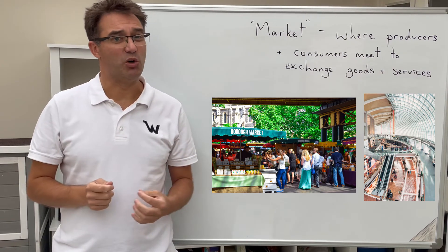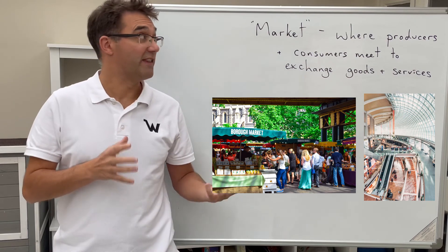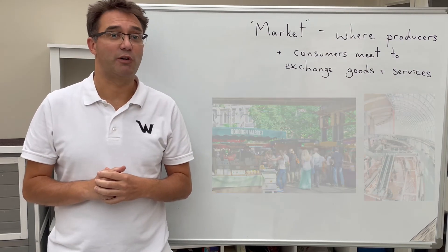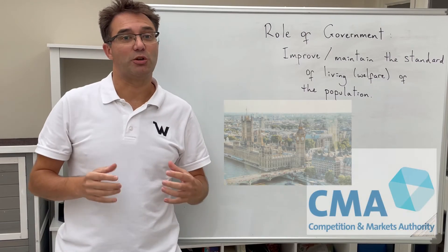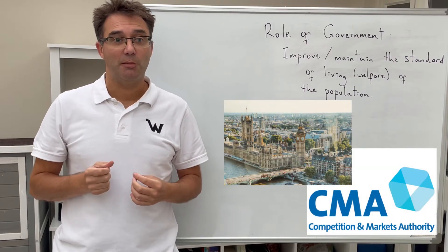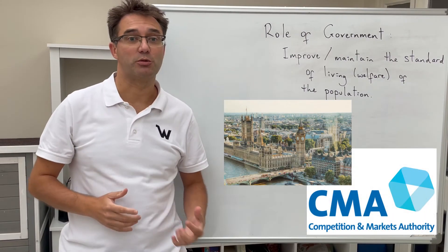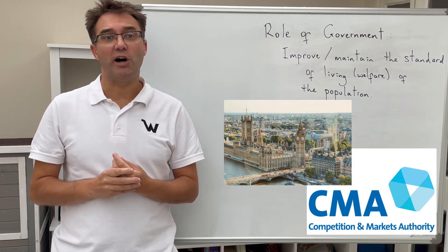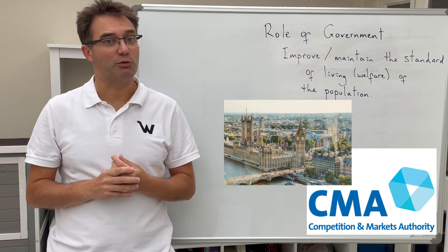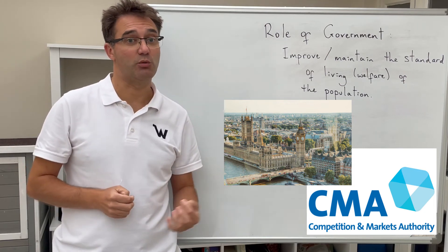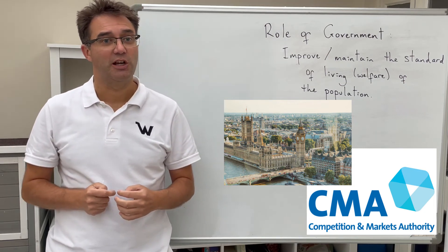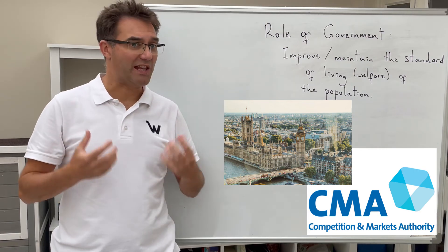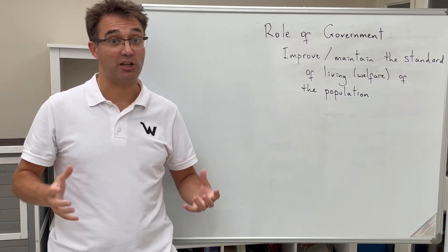Sometimes the market may not be working as well as it should — more on this in a later video — and the government will get involved. The government is a group that has the power to run a country, making decisions and enforcing the rules. It affects economies in two main ways: one is through intervening in markets to influence what's being produced or the price at which it's sold, and the other is through managing the economy as a whole through laws, spending, taxation and other economic tools.